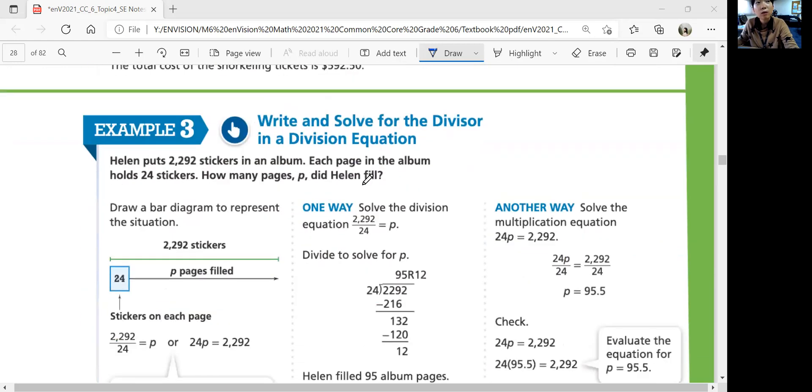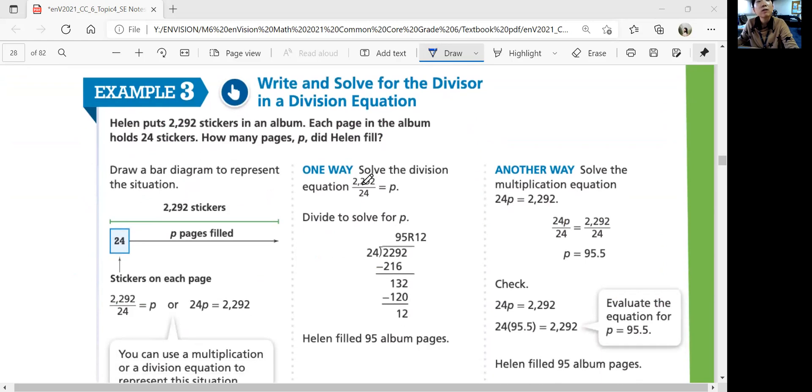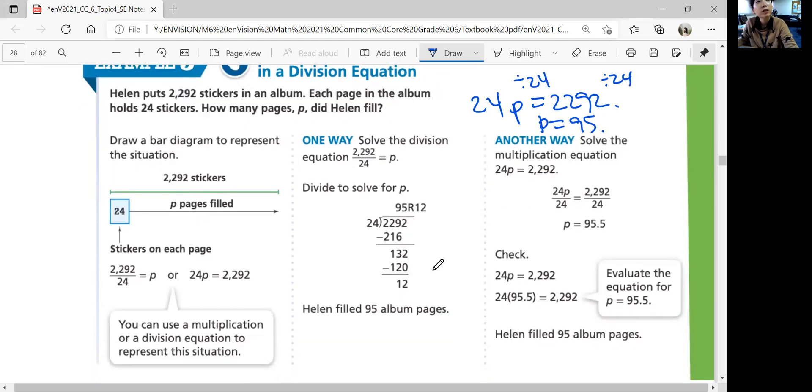Example 3. Write and solve for the divisor in a division equation. Helen puts 2,292 stickers in an album. Each page in the album holds 24 stickers. How many pages P did Helen fill? So write an equation. 24 stickers for each page, which is P times P, should be total of 2,292. And then you divide each side by 24. So you get P is equal to 95. So she filled 95 album pages total.